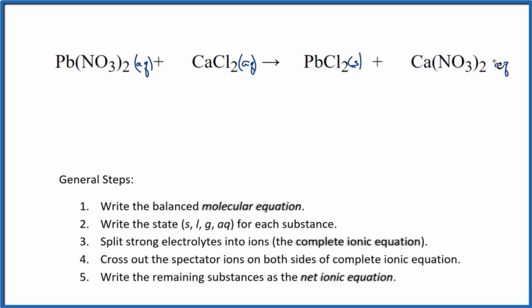Nitrates, again, very soluble. We have the states. Now we're going to split the strong electrolytes into their ions for the complete ionic equation. So we can't tell lead, that's a transition metal. But we do know the entire nitrate ion, good one to remember, is 1 minus.